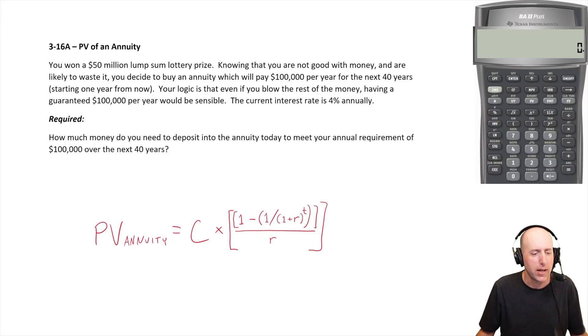Knowing that you're not good with money and are likely to waste it, you decide to buy an annuity which will pay $100,000 per year for the next 40 years, starting one year from now. Your logic is that even if you blow the rest of the money, having a guaranteed $100,000 per year would be sensible. The current interest rate is 4% annually.